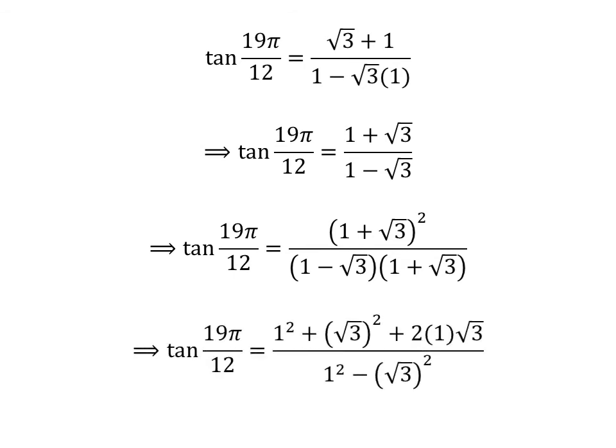Let us expand the square of 1 plus square root of 3. In the numerator we have square of 1 plus square of square root of 3 plus 2 times 1 times square root of 3. In the denominator, 1 minus square root of 3 times 1 plus square root of 3 is square of 1 minus square of square root of 3.